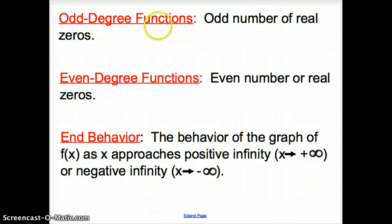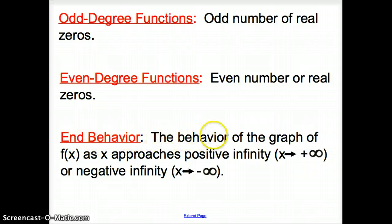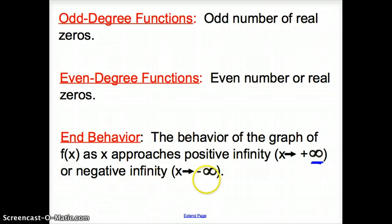Some more vocab words. Odd degree functions have an odd number of real zeros. Even degree functions have an even number of real zeros. End behavior is the behavior of the graph of f of x as x approaches positive infinity or negative infinity.